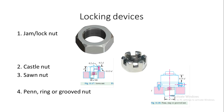Next we will see locking devices, or the types of nuts. The first is the jam or lock nut, which has a flat circular top and a hexagonal outer shape. Then we have the castle nut, where the top is not circular — instead it has a hexagonal provision on top, with threads inside for the nut. Then we have the sawn nut, where in addition to the nut there is a small screw used for fastening the nut and the internal screw. Finally, we have the pen ring or groove nut, which has an additional horizontal pin used for connecting the screw, bolt, and nut together.